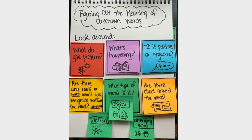Also, what type of word is it? Is it an action word? Is it an object? Or is it a describing word? And then lastly, ask yourself, are there clues around the word? You can look before — maybe in a sentence or two before the word that might give you some clues. There might be clues within the sentence itself, or there might even be some clues in the following sentence or two after the word.